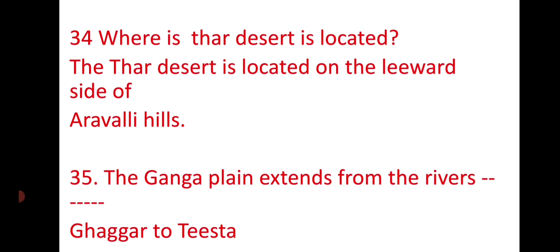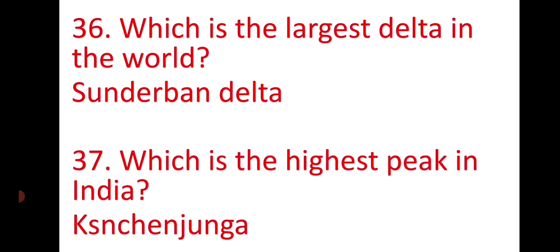The Ganga Plains extend from the Ghaggar River to the Teesta River. Which is the largest delta in the world? The Sundarbans Delta is the largest delta in the world. It is formed by the Ganga River.